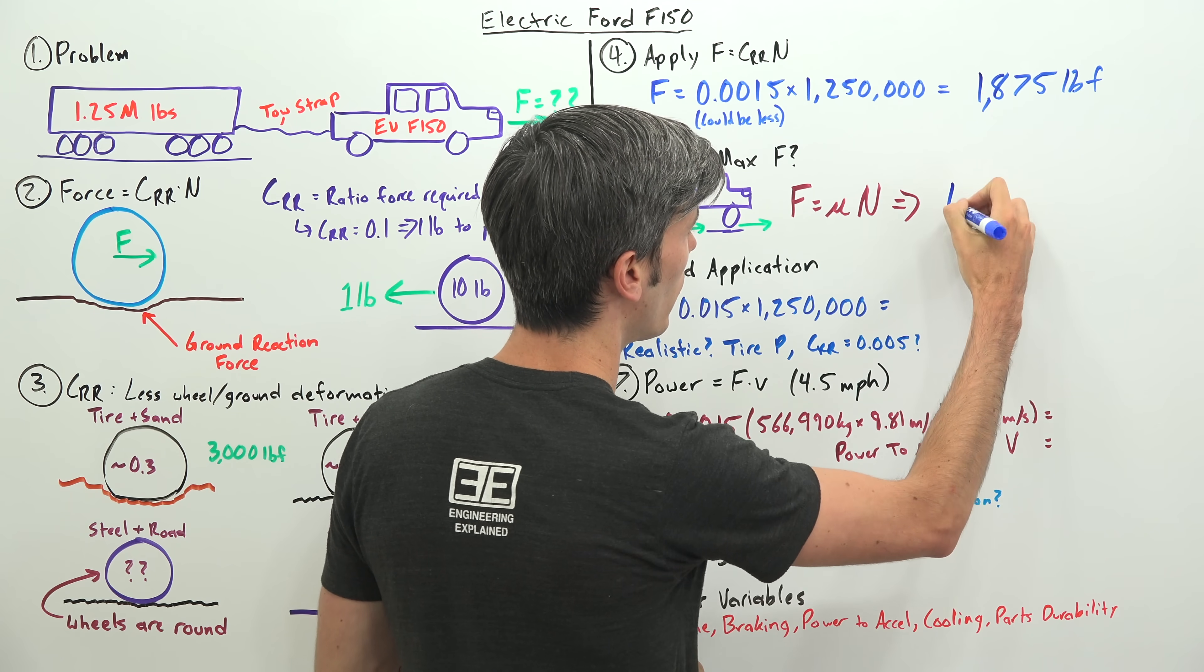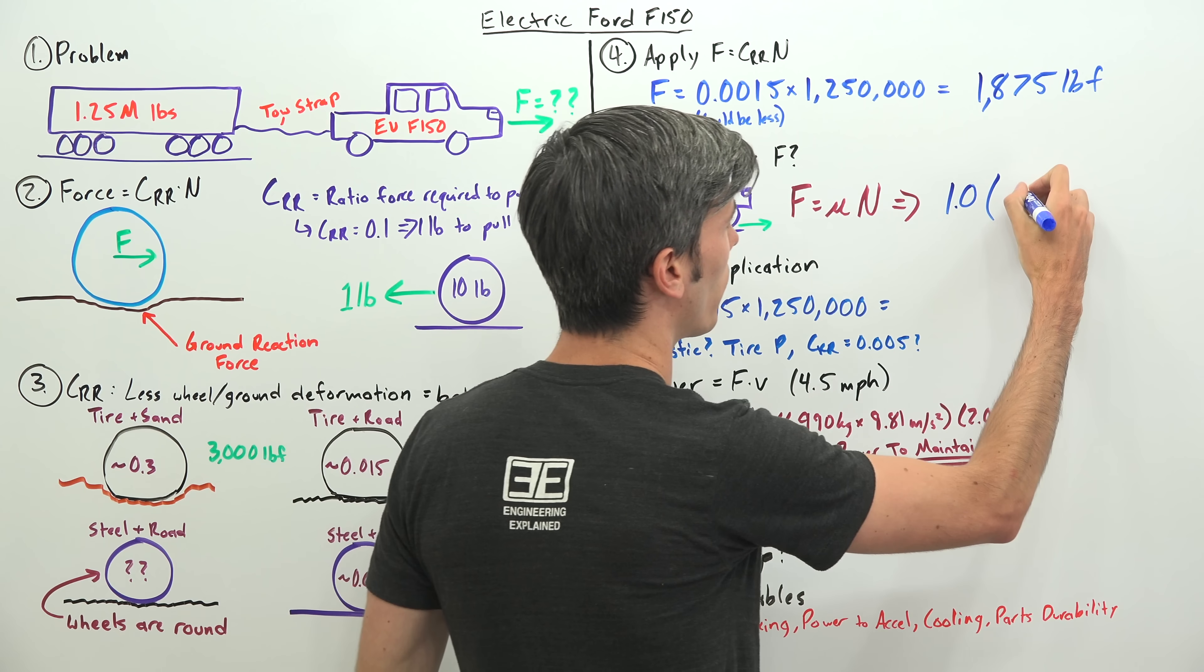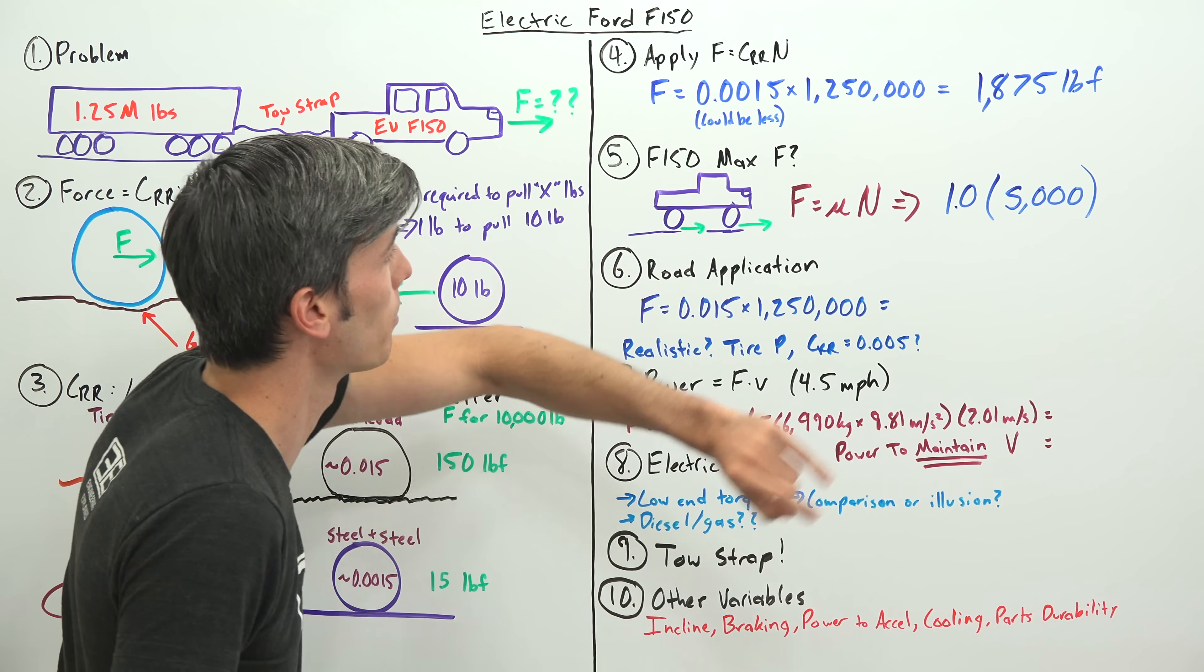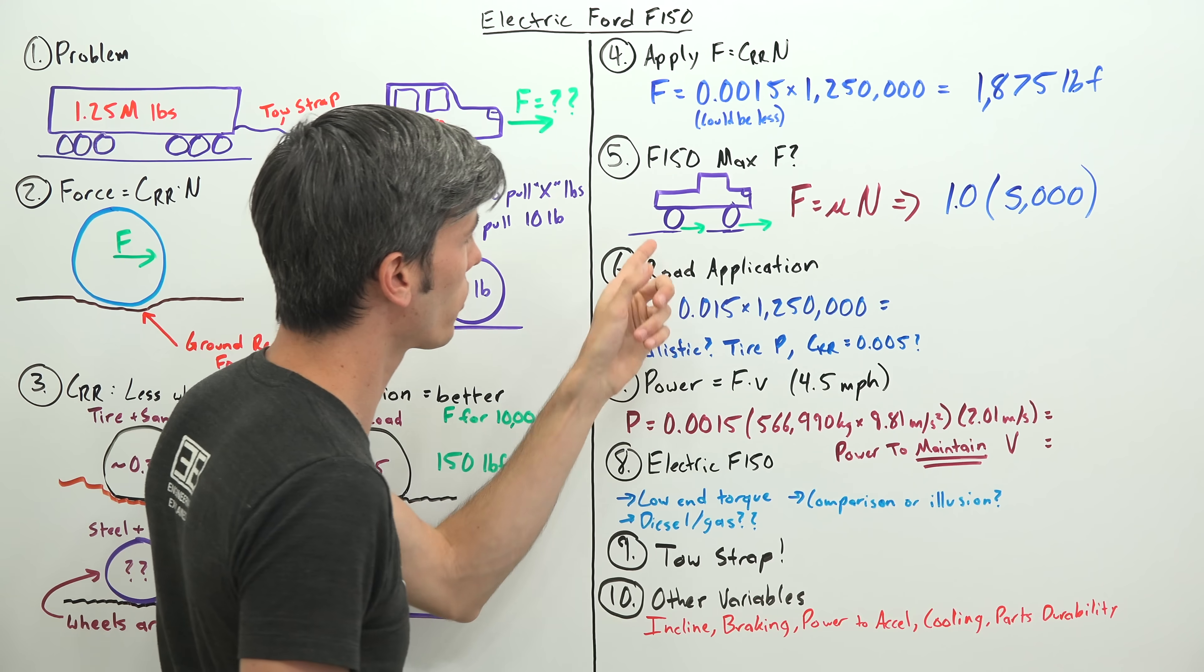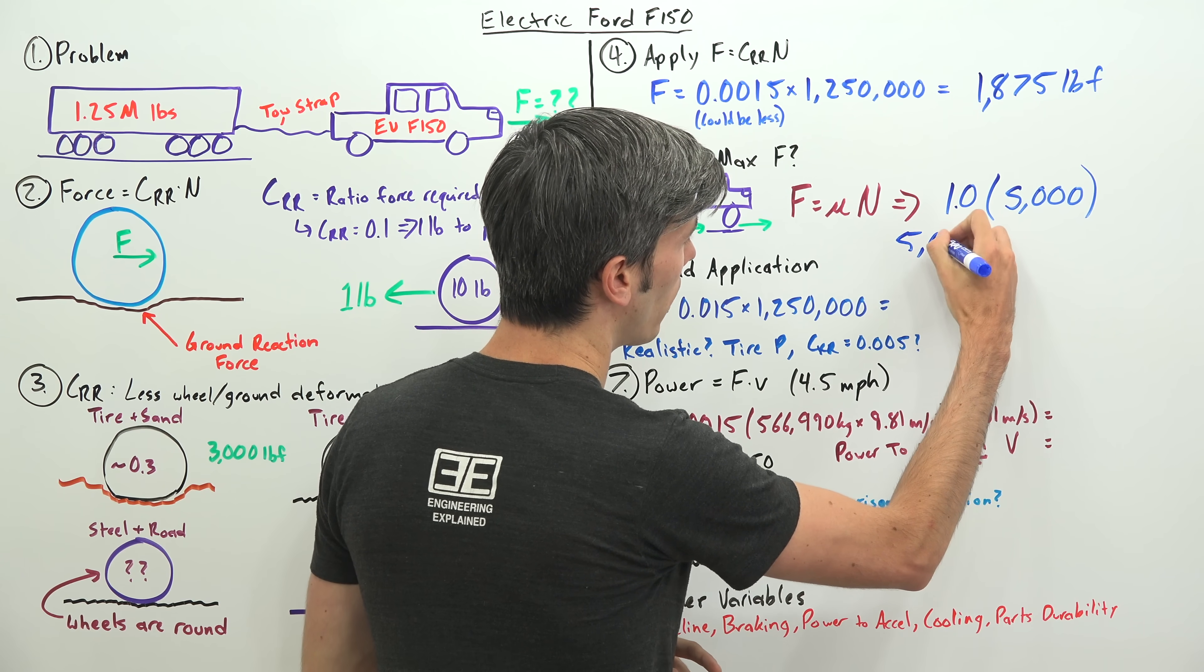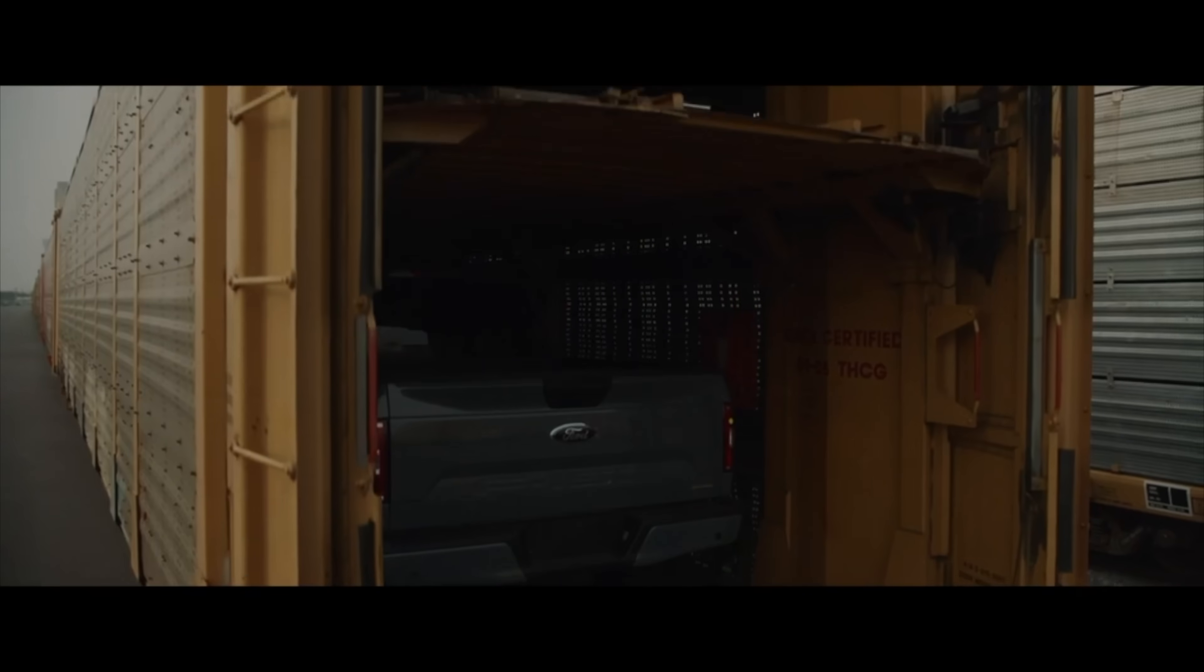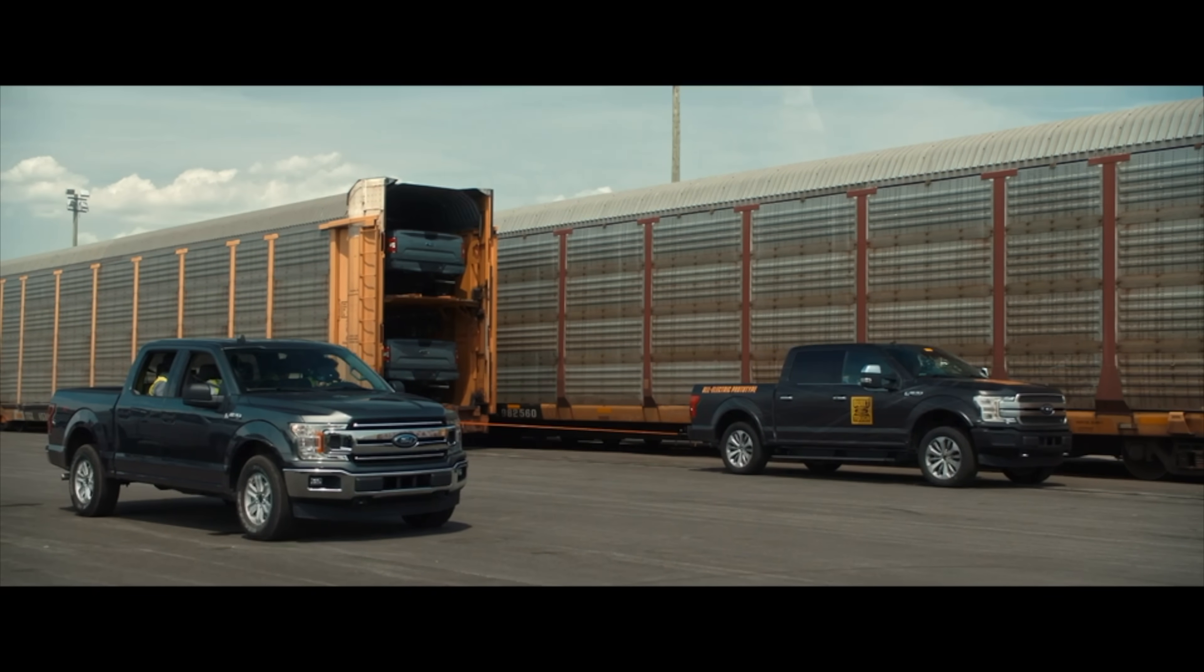So the force equals, let's say our frictional coefficient is 1.0, nice conservative estimate, and our normal force, let's say the truck weighs 5,000 pounds. It may weigh a little more or less, we don't know, but that's in line with a current super crew cab F-150. So the maximum force that this F-150, assuming it has four wheel drive, can move forward and pull is 5,000 pounds. And obviously 5,000 pounds is greater than 1,875 pound force. So as a result, this thing is capable of pulling a 1.25 million pound load. How cool is that?